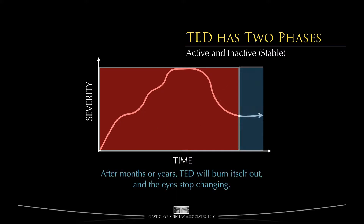Eventually, over weeks, months, or years, the thyroid eye disease always burns itself out, and the eyes stop changing. We call that period the stable or inactive phase. The eventual goal, of course, is to move from the stable phase to the full recovery of eye comfort, protection, function, and normal appearance.